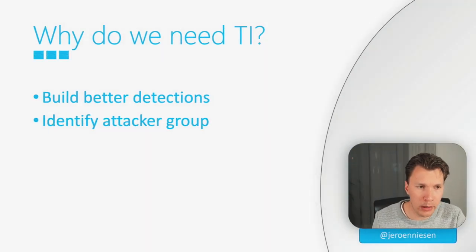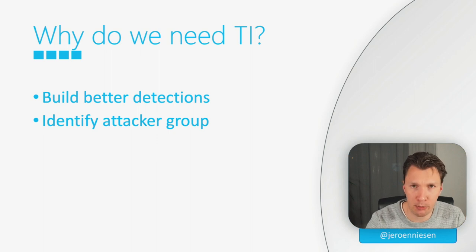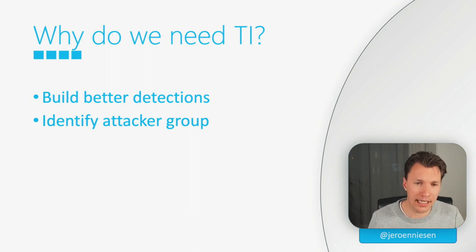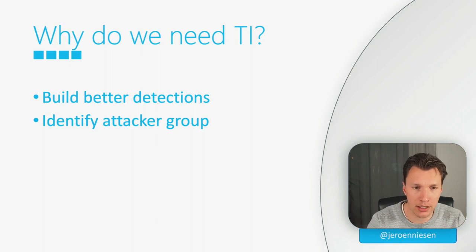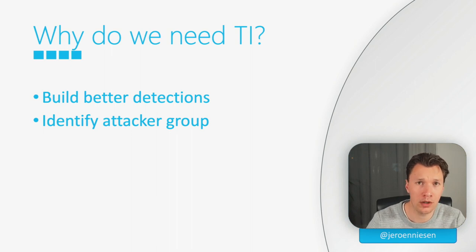Why do we need threat intelligence? First, to build better detections. We can use that IP address to make better detections — for example, if we see a sign-in from that IP address, it could be the attacker, so we can build analytics rules with that data. Secondly, we can use it to identify the attacker group. Attacker groups often use the same file hashes because they reuse the same malware, so we may be able to identify an attacker group.